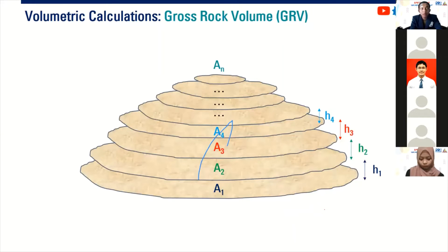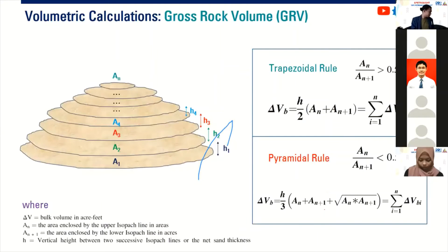So this is actually done by our friends from geologists. It's not done by petroleum engineers. So this is particularly the main responsibility of geologists. But as engineers, we need to know the logic behind the calculation. So after the reservoir has been segmentized like this one, we can actually calculate the total gross rock volume. We can do trapezoidal rule or we can also do pyramidal rule.